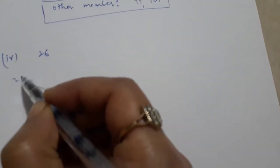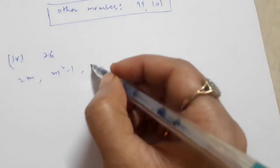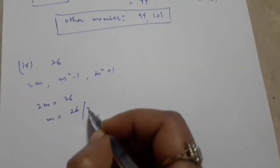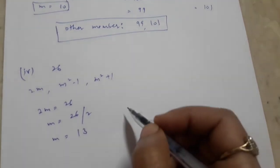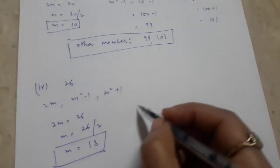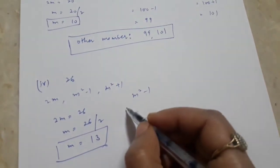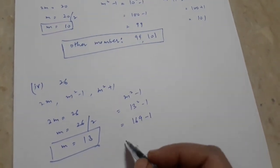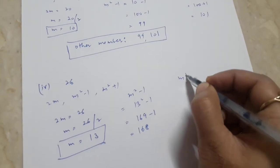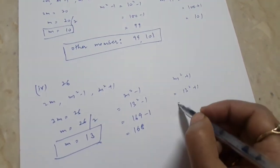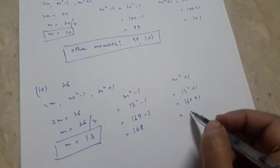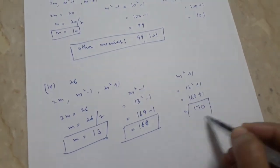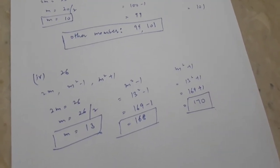For the fourth and last part of question number seven, the same steps are followed. We equate 2m = 26, so m = 13. Then m² − 1 = 169 − 1 = 168, and m² + 1 = 169 + 1 = 170. So the other two members are 168 and 170. I hope all the options are very much clear to you.